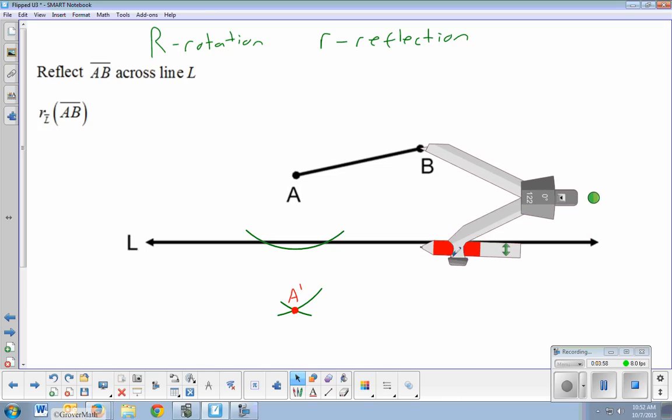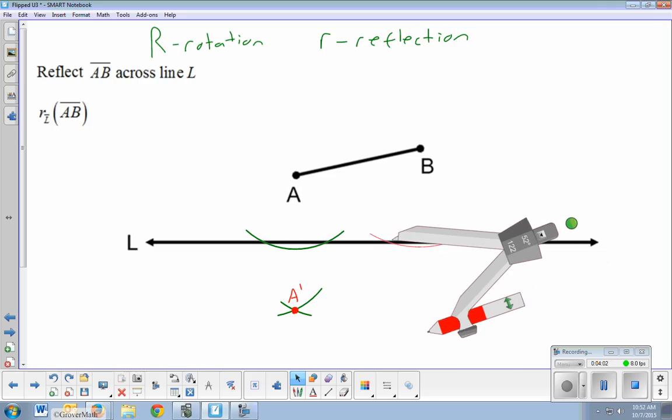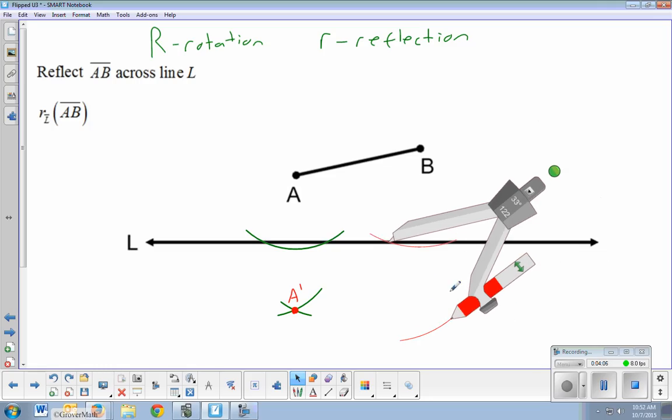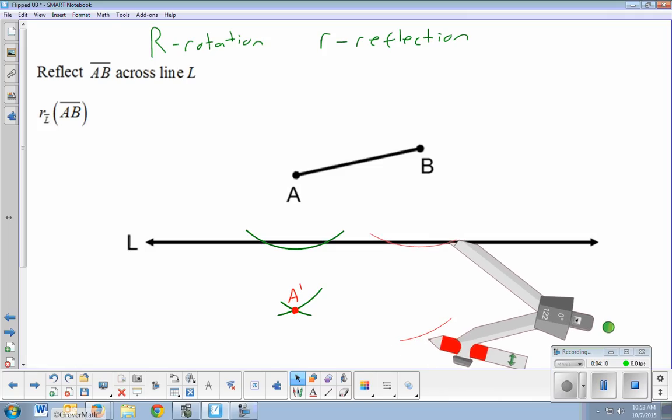And I'll do one for B. Extend it so that it's going to cross twice, once, twice, at that spot. And I'll change it over here.